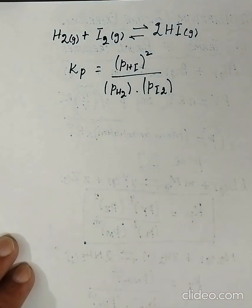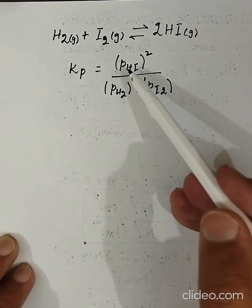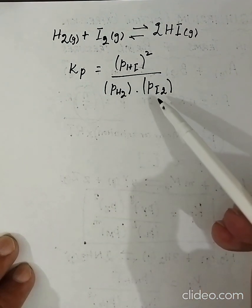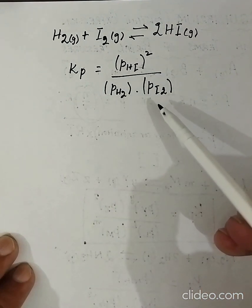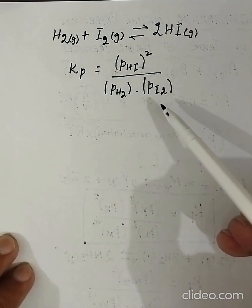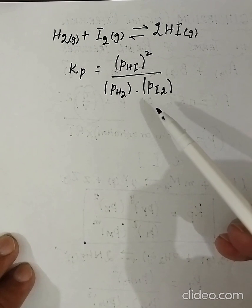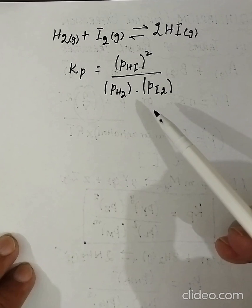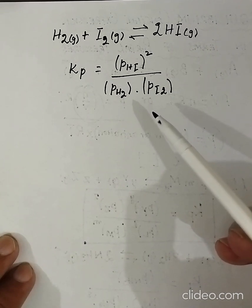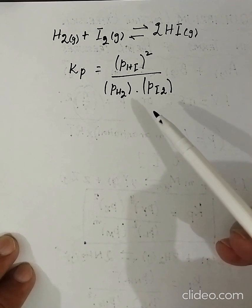These are two examples where partial pressure can be expressed in atmospheres. This is our today's topic. If you like and understand this topic, please subscribe to my channel, like my video, and share this video with your fellow friends. See you in the next video.